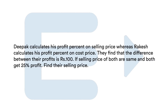Rakesh calculates profit percent on cost price, and the selling price is the same for both. The profit difference is 100 rupees — that is a rupee amount, not a percentage. The selling price is equal and the profit is 25%.